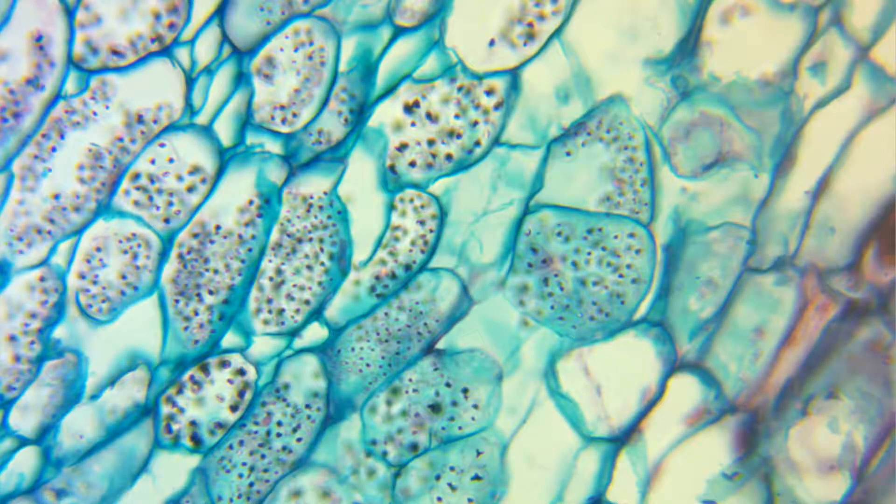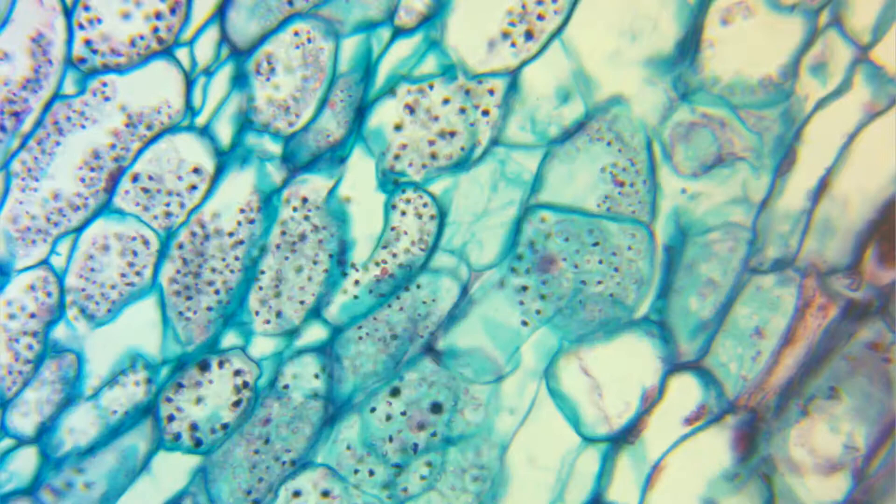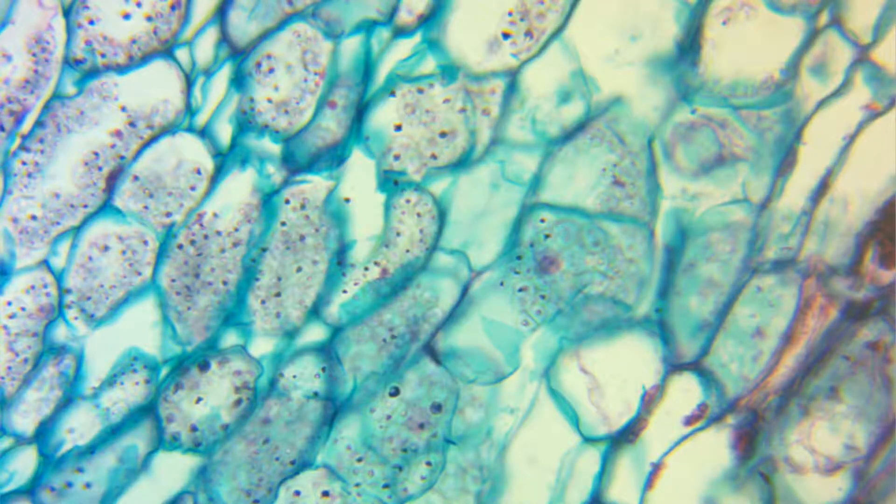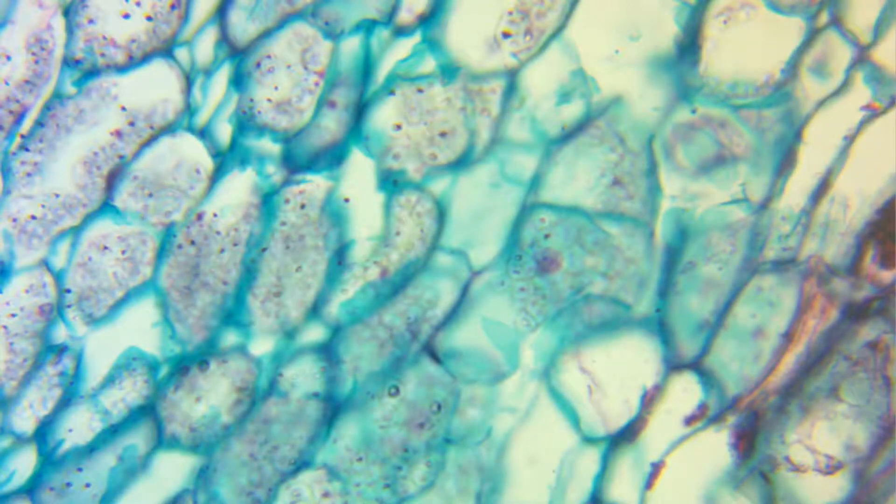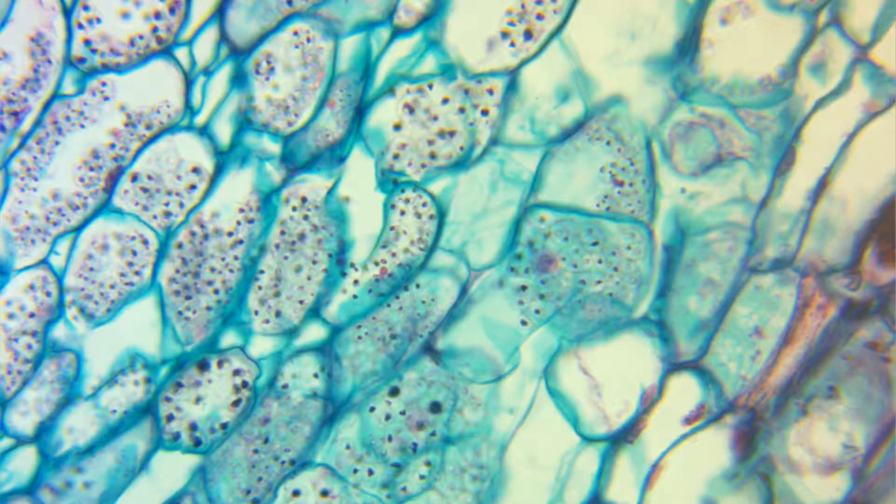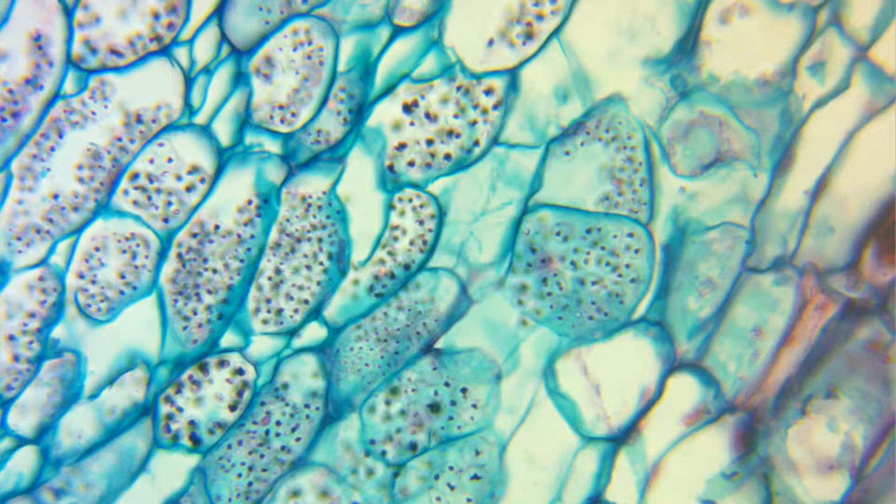1,160. Why are clayey soils unfavorable to vegetation? Because the soil is too close and adhesive to allow the free passage of air or water to the roots of the plants. It also obstructs the expansion of the fibers of the roots.